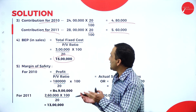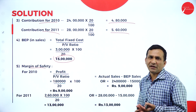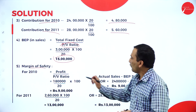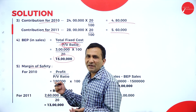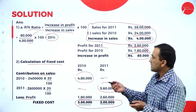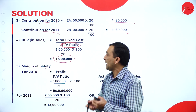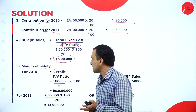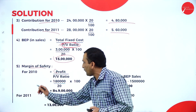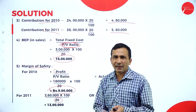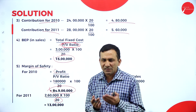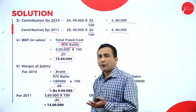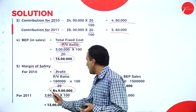Now moving to margin of safety. The formula is: profit divided by PV ratio. PV ratio is 20% as already calculated. For 2010, profit is 1,80,000 divided by 20 into 100, giving margin of safety of 9 lakhs. Alternatively, actual sales for 2010 (24 lakhs) minus BEP sales (15 lakhs) also gives 9 lakhs — the same answer confirmed.